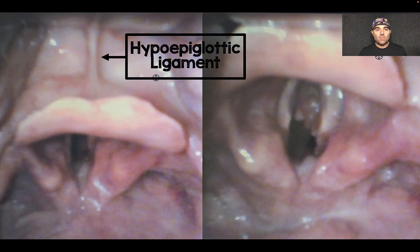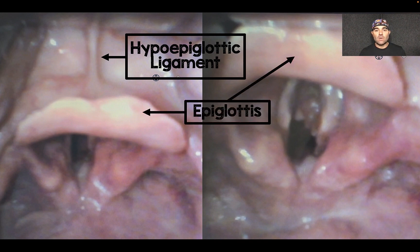So just to point this structure out, it's this thin little strip that you see just superior to the epiglottis, and just for a point of reference you can see the epiglottis on both sides.